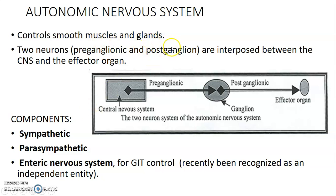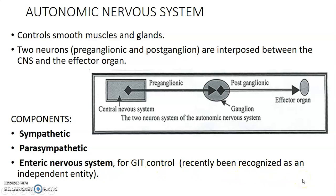What are the components of the Autonomic Nervous System? We have the sympathetic system and parasympathetic mainly. But some books also classify the enteric nervous system as a separate component, which controls the gastrointestinal system.